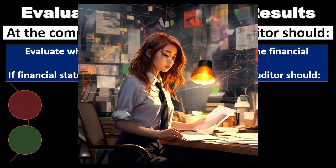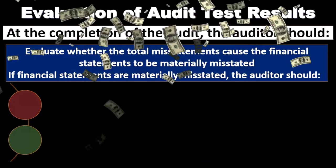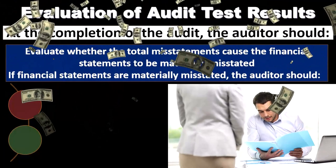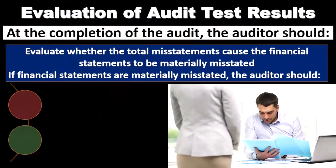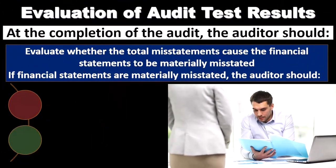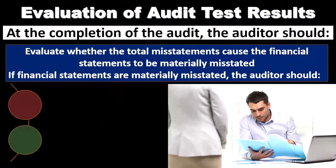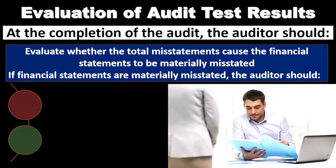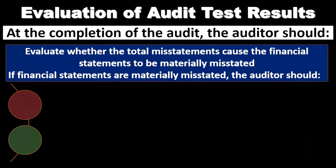As we think about what would constitute a material misstatement, we're also considering what is a tolerable level of misstatement — what level of misstatement would be tolerable at the financial statement level. Then as we go through the audit, we break it down into individual accounts, assertions, and transactions, considering what would be tolerable misstatements at the assertion level as we go through that testing.